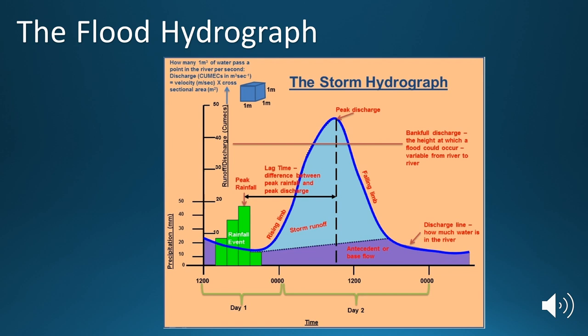So as we say, that dark blue line is the discharge line. And this is just showing us how much water is actually in the river at any given time. An increase is called the rising limb, to peak discharge, to the falling discharge, which we then call the falling limb.